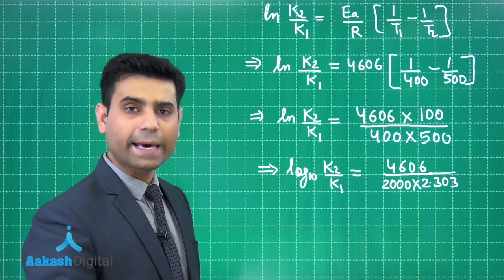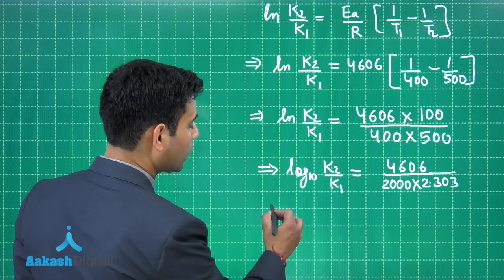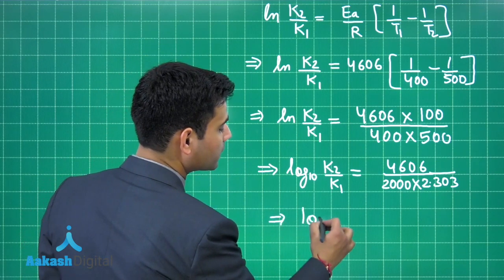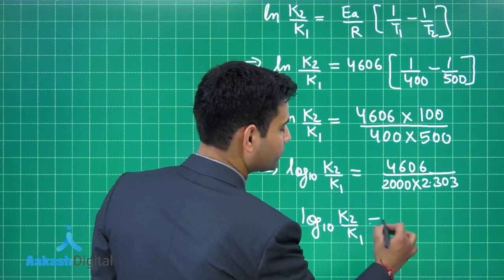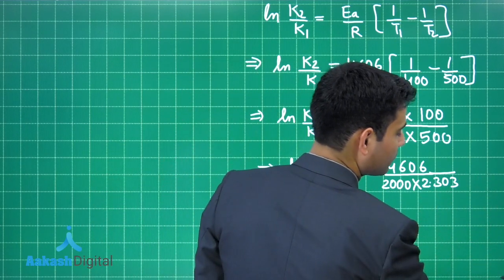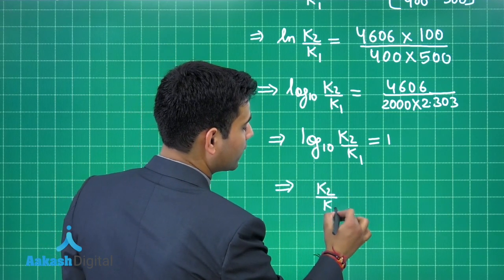Because natural log X is equals to 2.303 log based 10 X. On solving it will give us log based 10 K2 by K1 is equals to 1 or we can simply write that K2 by K1 is equals to 10.